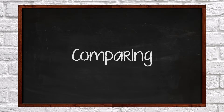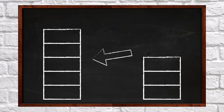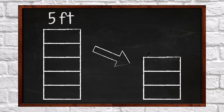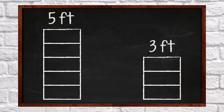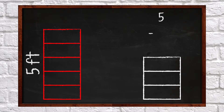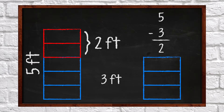Subtraction can also mean finding out how much bigger something is. What if I want to compare the height of two walls? This wall is five feet tall and this wall is three feet tall. How much bigger is this wall compared to this wall? We can subtract to find the answer. Five minus three equals two. This wall is two feet taller than this wall.